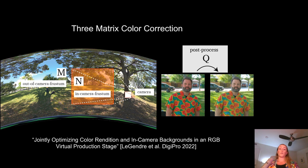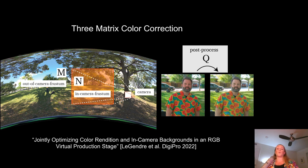Instead of applying our original color calibration matrix M, as in Mary, to in-camera frustum pixels, we apply the matrix N, as in norm, which is the original calibration matrix multiplied by the inverse of the post-correction matrix Q. If we know Q in advance, then we can solve for N as in norm. Because the background pixels don't contribute very much towards the actual lighting on the actors, both the foreground color rendition and the appearance of the in-camera background will be near optimal. We now have three matrices in our pipeline: matrix M transforms pixel values of content for LED panels outside the camera frustum; matrix N transforms pixel values for LED panels inside the camera frustum; and matrix Q transforms pixels recorded by the studio camera to the final pixels sent to editing. The in-camera matrix N is different from M because we know ahead of time we're going to post-correct the whole image with Q.